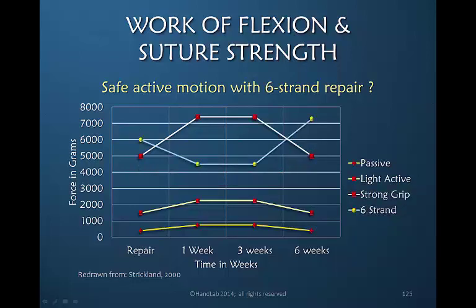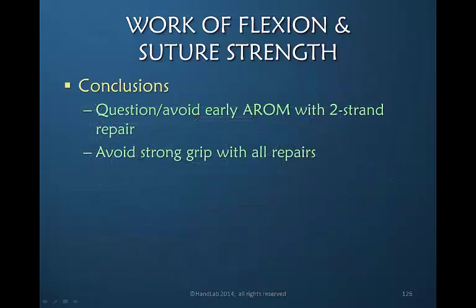The 6-strand repair is well above the thresholds for light active and passive motion, but we would caution against strong grip until the 6-week period when there is some divergence. The conclusions from Strickland's work are that we should question and perhaps avoid early active range of motion protocols with 2-strand repairs, and with all repairs the patient should avoid strong grip until at least 6 weeks — and in some circumstances it is prudent to wait a few weeks beyond 6 weeks to assure the tendon is strong enough.